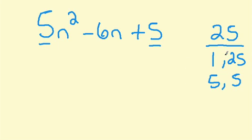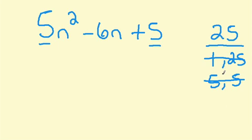Now we're going to evaluate these factor pairs that we discovered. We're going to try to combine them — add or subtract them in some way — to give us our middle b term. 1 plus 25 is 26. 25 minus 1 is 24, so that one doesn't work. 5 plus 5 is 10. 5 minus 5 is 0, so that doesn't work. And so when we come to this situation where none of the factor pairs for the a times the c term give us the b term,